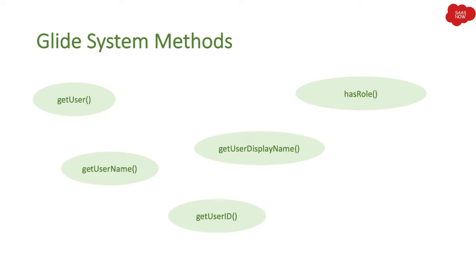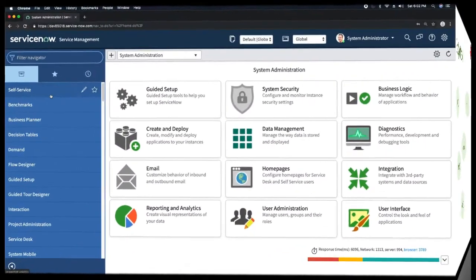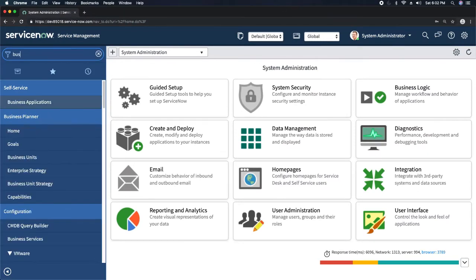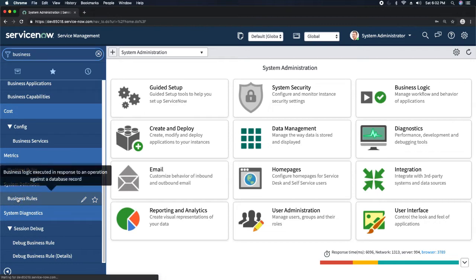Now, these are some methods but it's not all the methods we have under GlideSystem — we have multiple methods, which I will show you in my examples when I create some business rules. Here you can see some basic examples of GlideSystem methods: we have getUser, getUserName, getUserDisplayName, getUserID, and hasRole. But we have many more GlideSystem methods. Let's take a look in our personal developer instance to see how many APIs we have, and let's create some business rules with the help of GlideSystem.